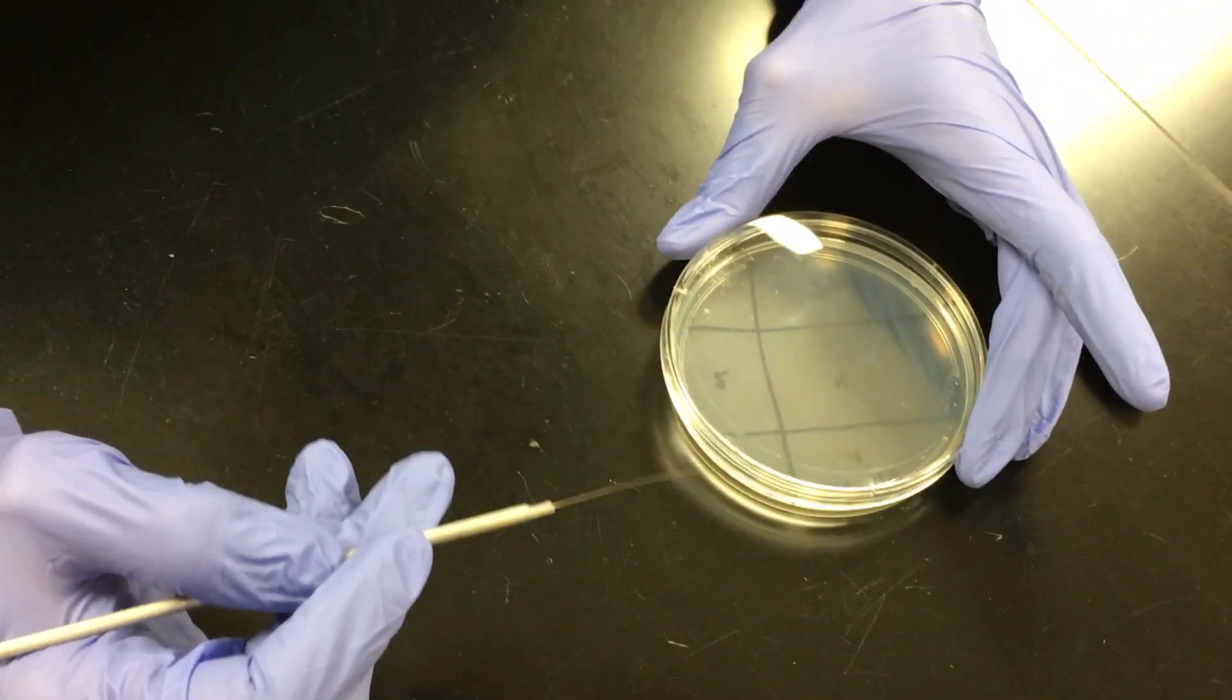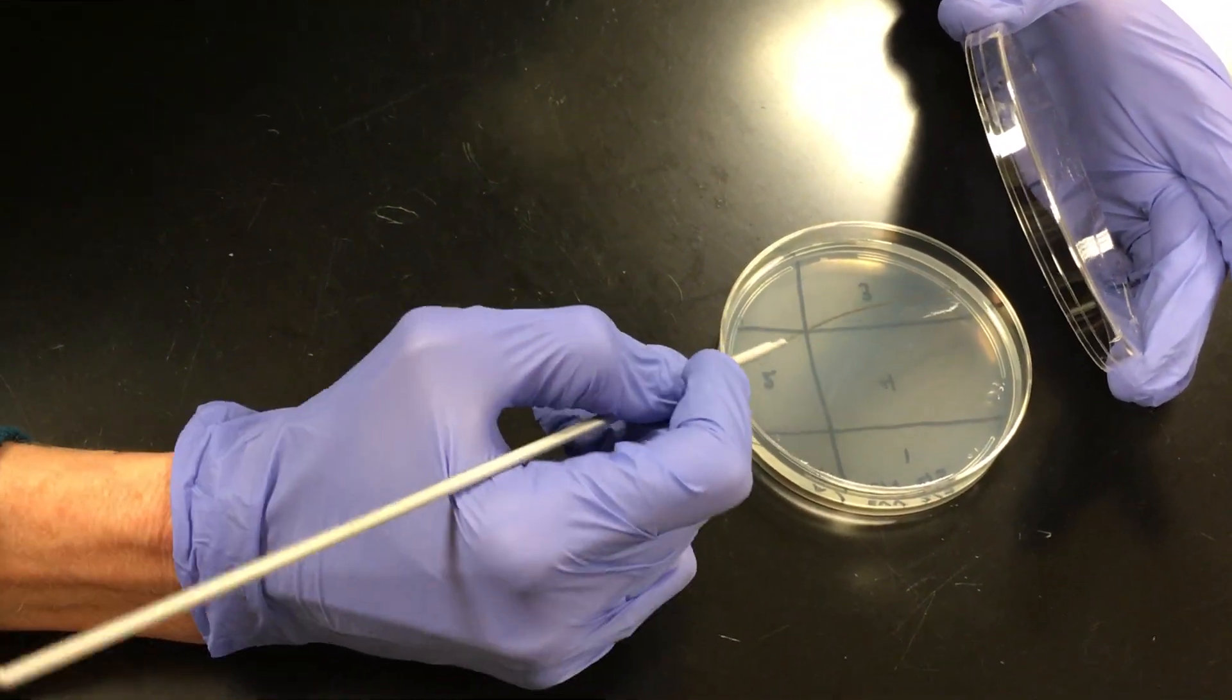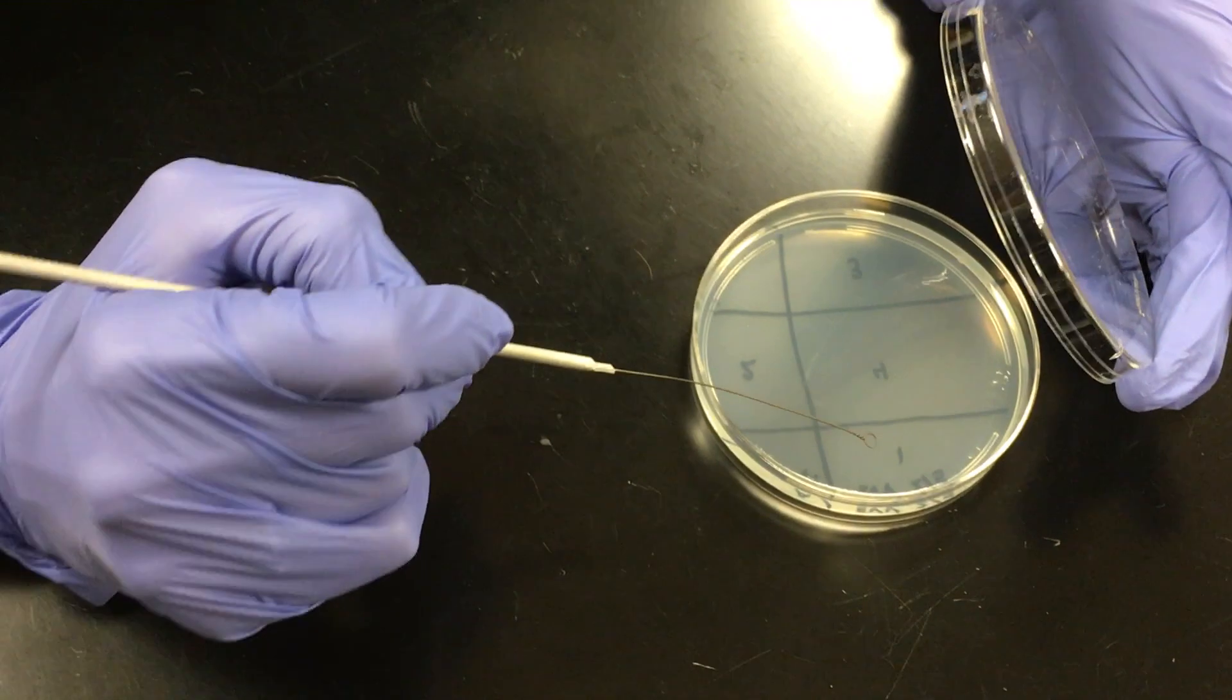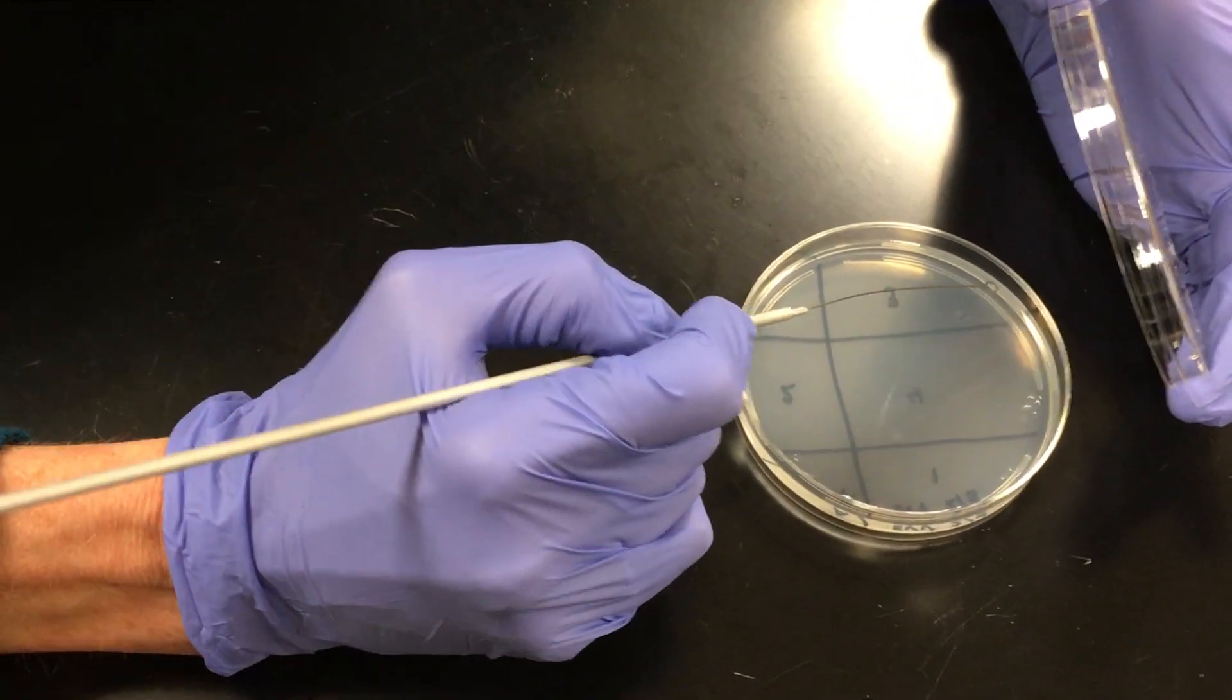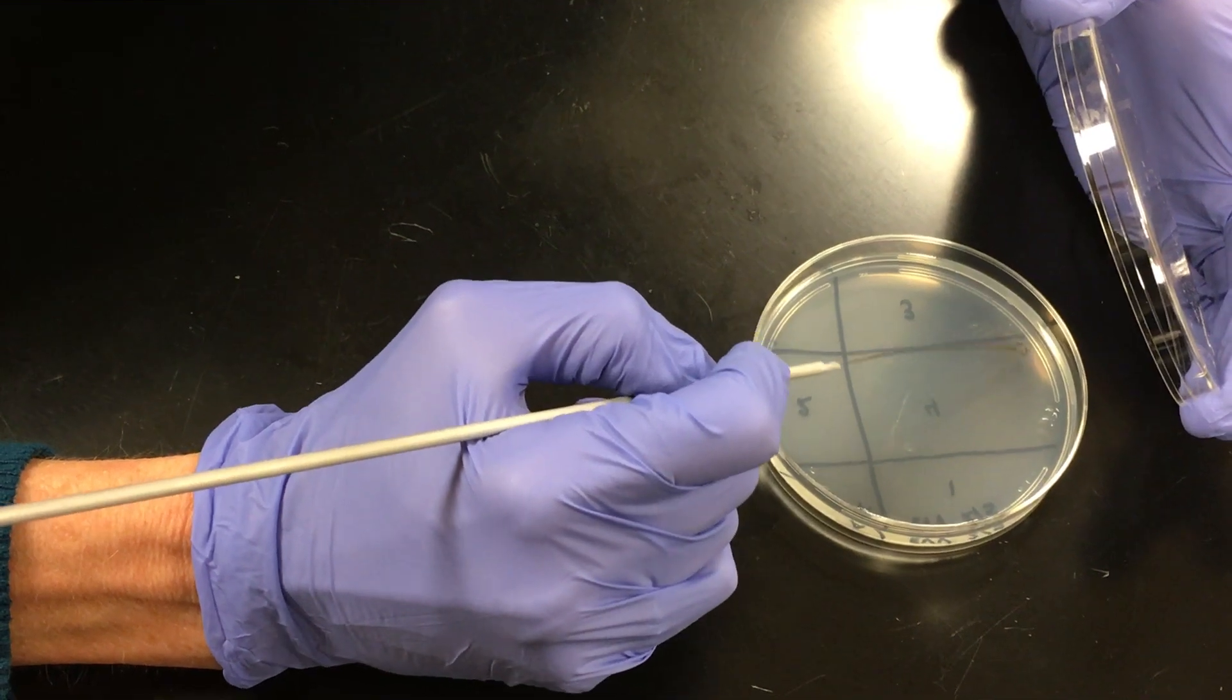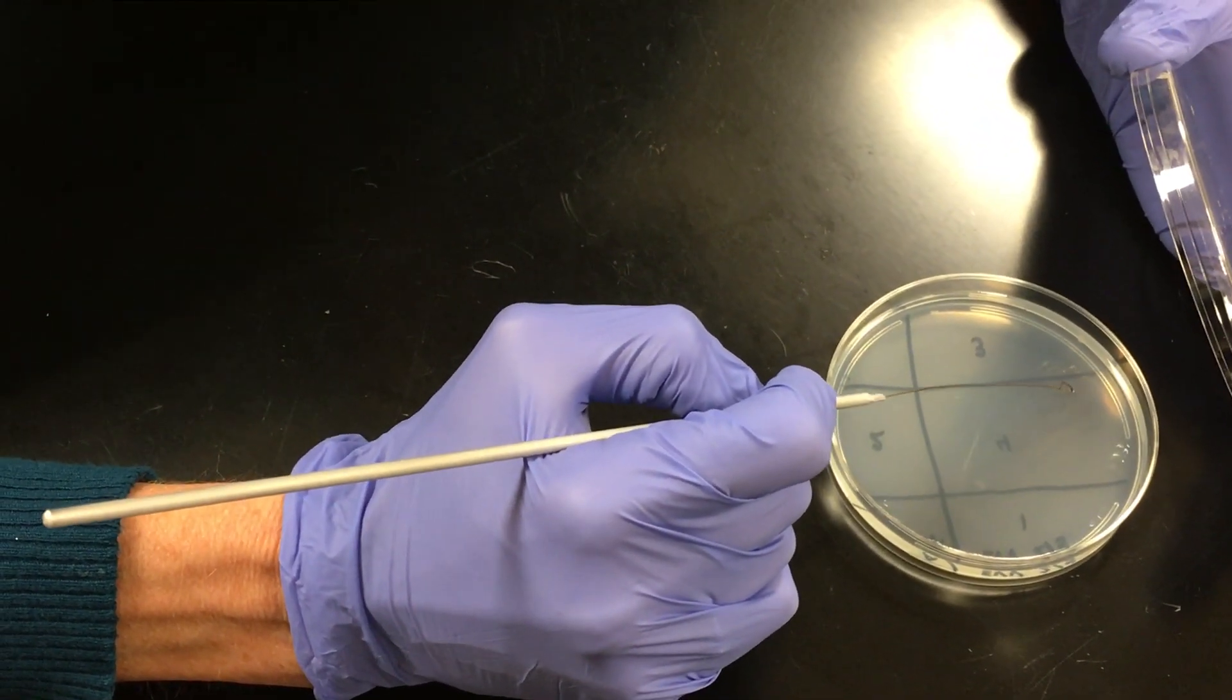So now this quadrant four is the money quadrant. It's going to be a little bit different. I'm only going to go into quadrant three two times. So, oh, got a sizzle. We don't want to burn our bacterium. Sizzle. Okay. So one, two, and now I'm not going to go back into three.